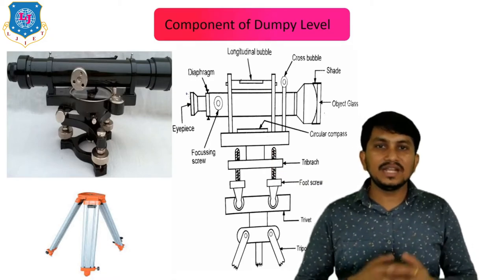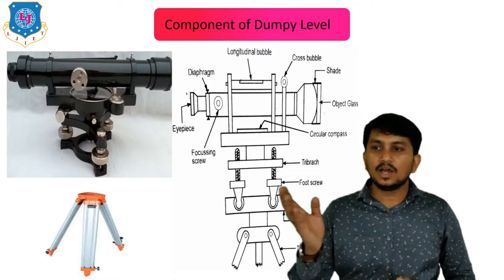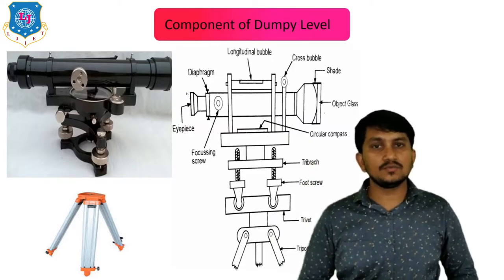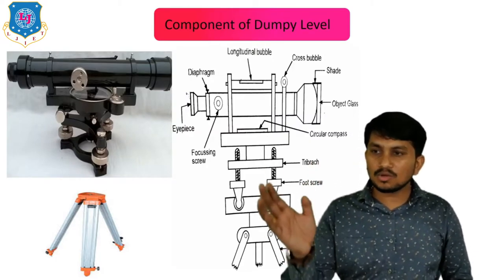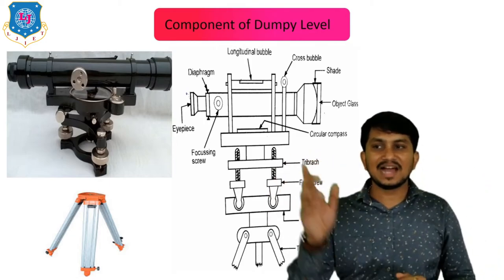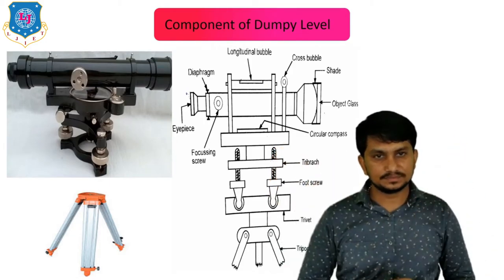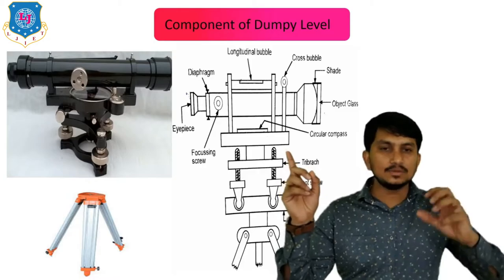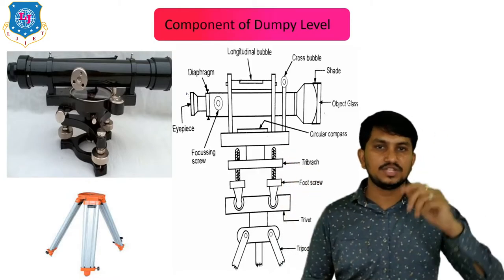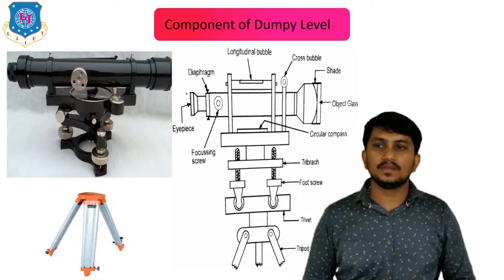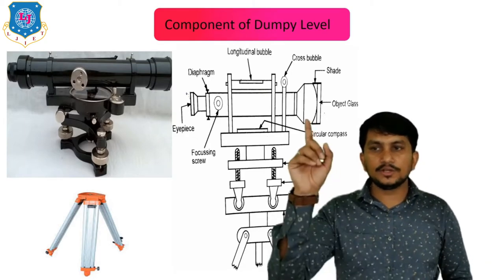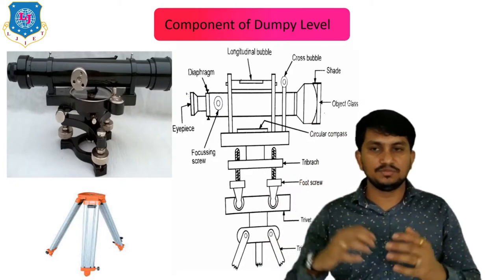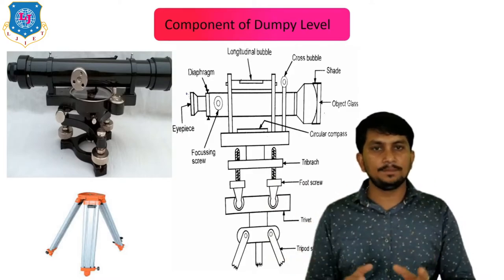The foot screws help to level the instrument. Above the leveling head, one compass is attached which is used to find the bearings. Above the compass, a telescope is there having an eyepiece and an object glass; the eyepiece is used to see the object. One focusing screw is used to focus the object. Above the telescope there are two bubble tubes — a longitudinal bubble tube and a cross bubble tube — which check the leveling of the instrument.